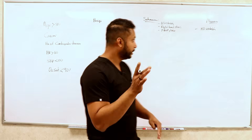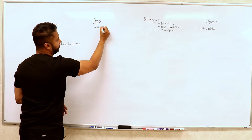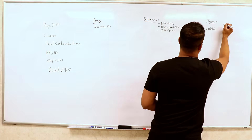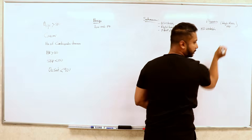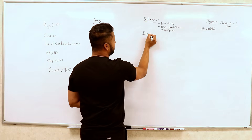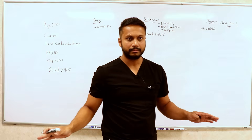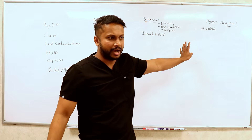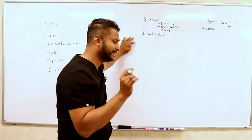But now the terms have changed. If you have a benign PE, you now call this a low risk PE. If it is a massive PE, we call this a high risk PE. And if it is sub-massive, we are going to call it intermediate risk PE. Very simple — that's the major change: benign is now low risk, massive is now high risk, and sub-massive is now intermediate risk.